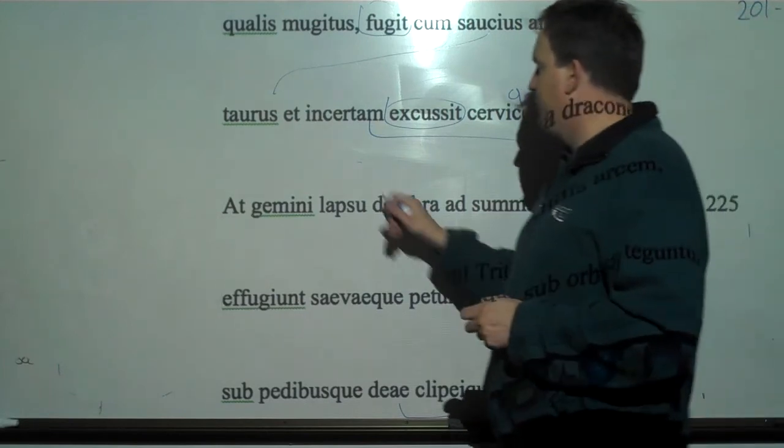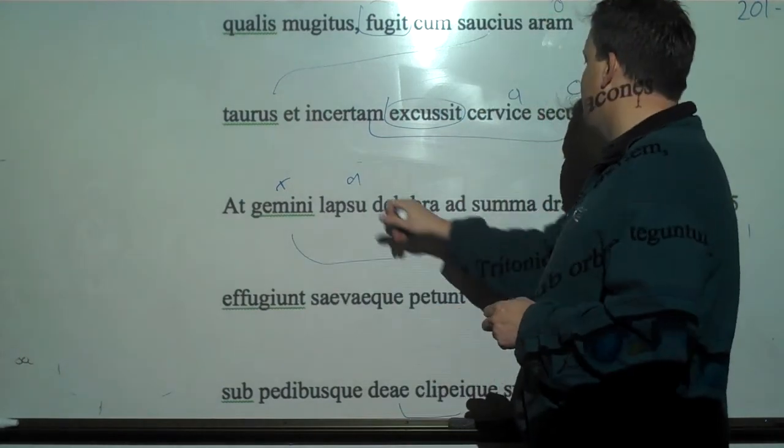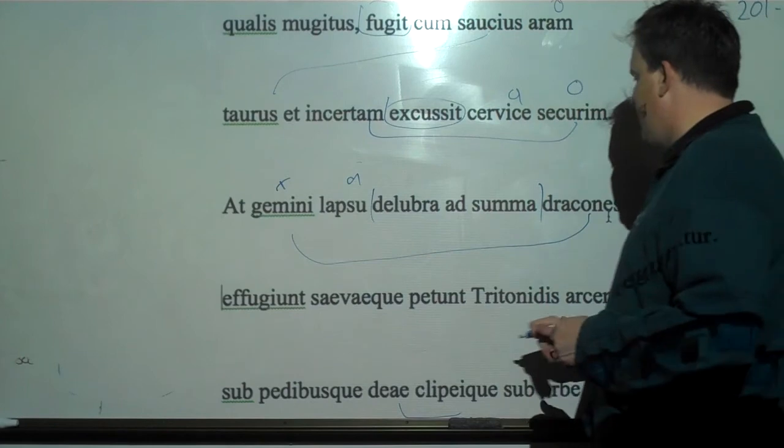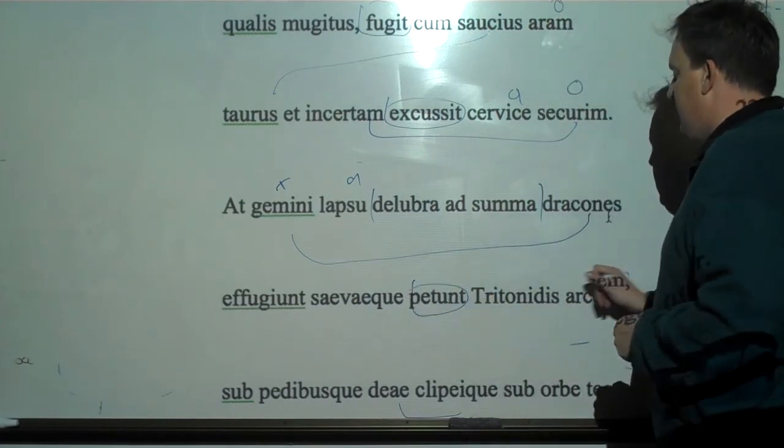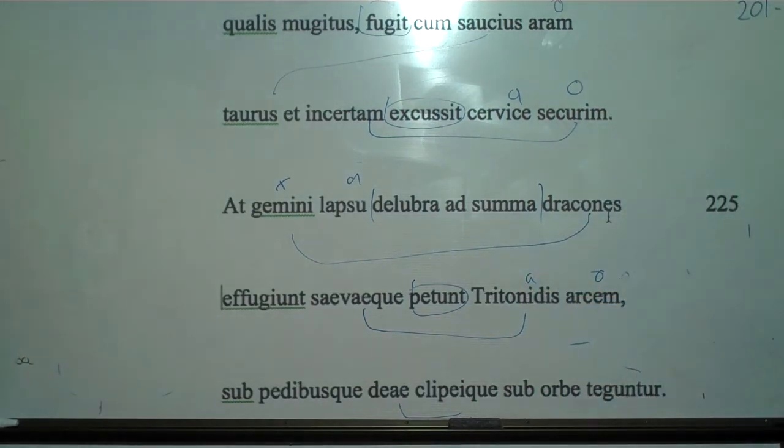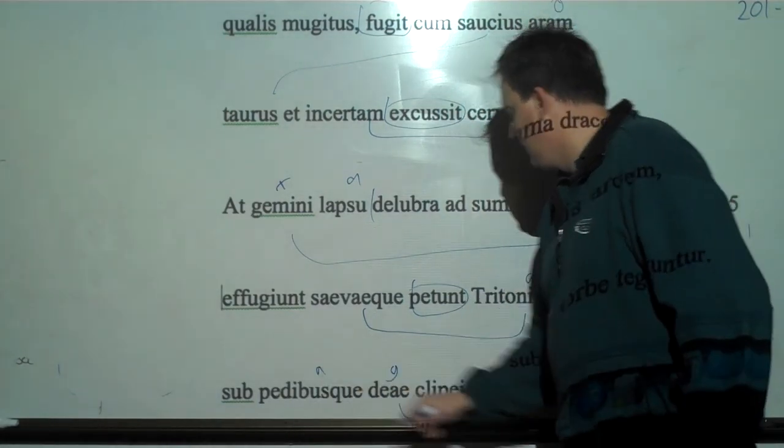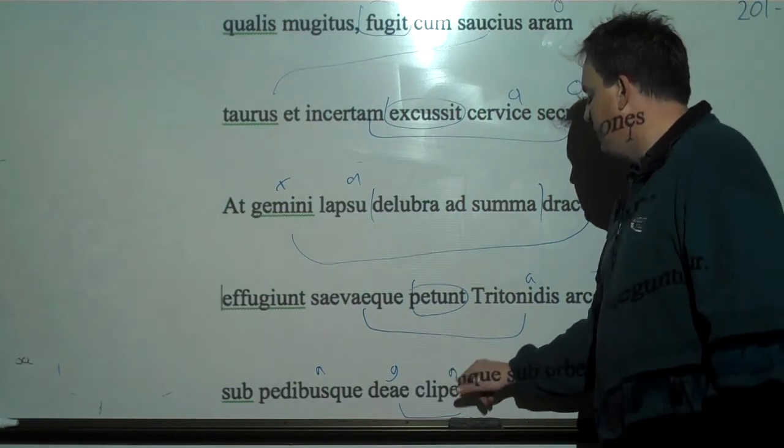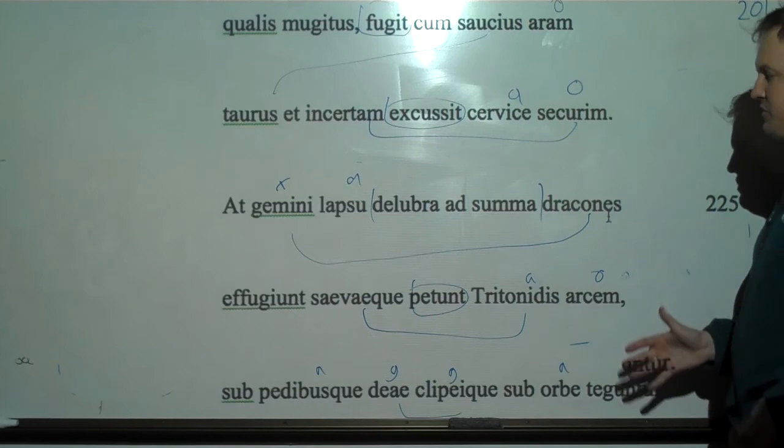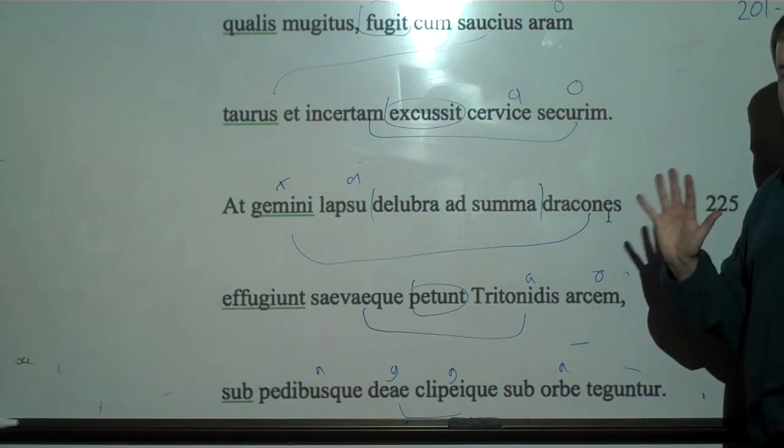But the snakes, with their gliding, the twin snakes, dracones. They flee and they seek the citadel of savage Tritonidis. And are covered under, so they go up to the shrine of Minerva. This also kind of gives you the image of this is Minerva, so this is okay. And they are covered under the feet of the goddess and under the circle of her shield. So Laocoon is eaten. His sons are killed. And the snakes go up to the citadel. What an image. All right. Well, valete omnes, lingua Latina esuita.